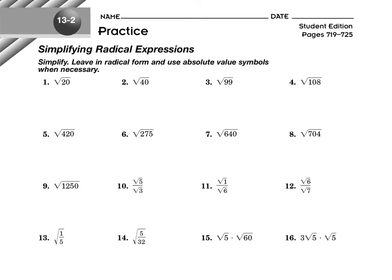Okay, so here we have simplifying radical expressions. Let's start with number one and jump right in. Perfect square — that's a factor of 20. Remember, we're looking for perfect squares and leftovers. We're not approximating, no calculators. We're going to leave answers in radical form with no absolute value symbols because we get to assume all variable values are positive.